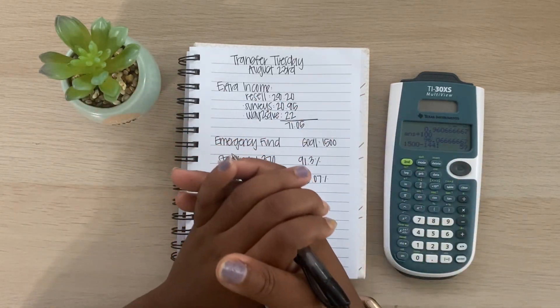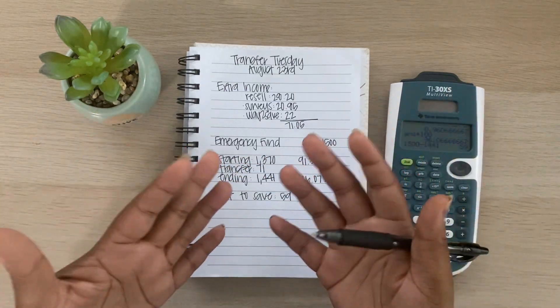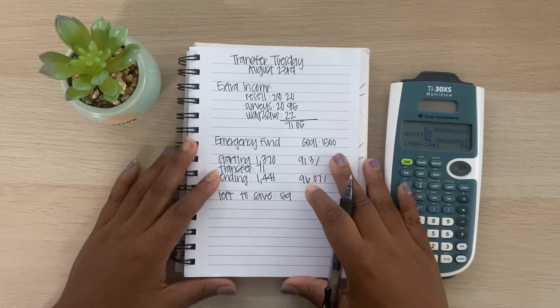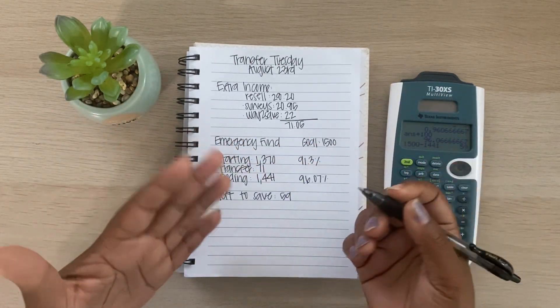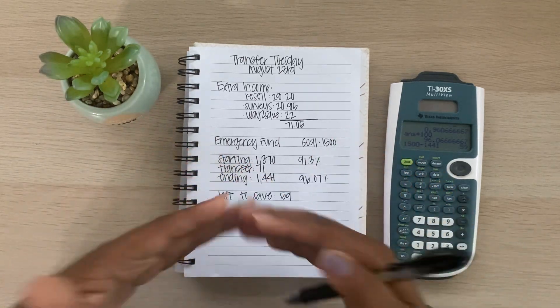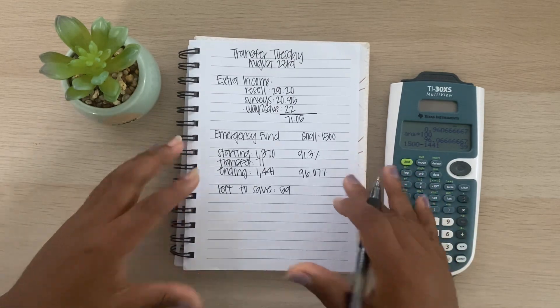So if you guys have any suggestions on how I can make this last $59, then go ahead and drop them in the comments. Let me know. Like I said, my goal is to have this fully funded by the end of August so that I can start working on my next financial goal. But again, you guys, that is it for today's video.